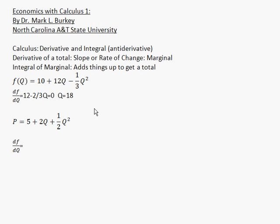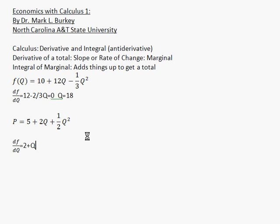Here's another function: p = 5 + 2q + 1/2 q². What's the derivative? The derivative of 5 is 0, the derivative of 2q is 2, and for 1/2 q² — bring down the 2, multiply by it: 2 times 1/2 is 1 — then subtract 1 from the exponent and you get q. So the derivative is 2 + q. Same idea: it tells you the slope or the marginal.